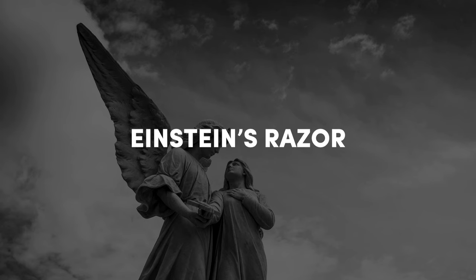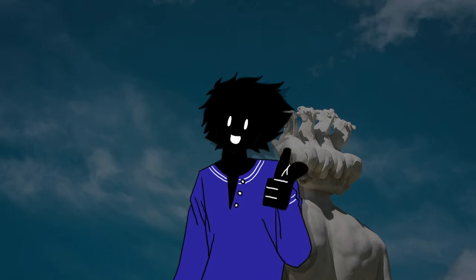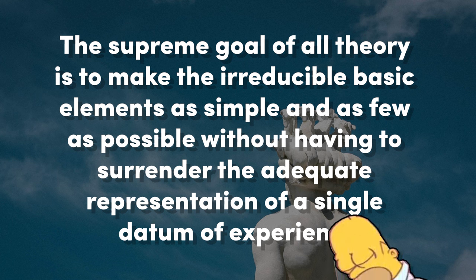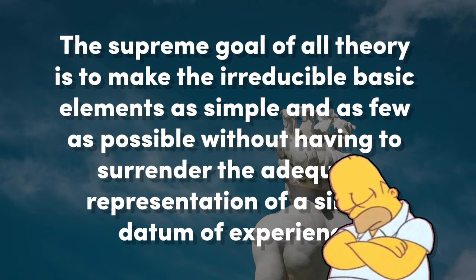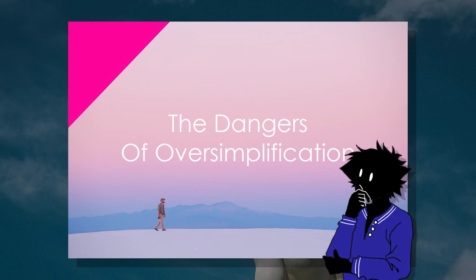Einstein's razor. Basically, to make things as simple as possible, but no simpler. Although the direct quote is: 'The supreme goal of all theory is to make the irreducible basic elements as simple and as few as possible, without having to surrender the adequate representation of a single datum of experience.' It emphasizes that simplicity should not come at the cost of oversimplifying to the point where essential aspects of a theory are neglected.